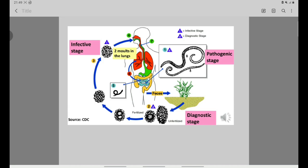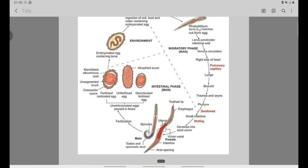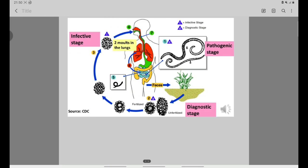Fertilized eggs become embryonated eggs, which is the infective stage. These embryonated eggs are ingested through food and water, reach the small intestine, hatch into larvae, and enter the portal system through the heart to pulmonary arteries. This is the migratory stage to the lungs.